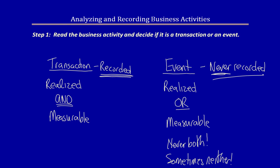Let's do two quick examples. A business provides consulting services. On July 1st a client signs a contract with the business that requires the business to provide three months of services in exchange for $12,000. Event or transaction? This is an event. Even though it is measurable at $12,000, it is not realized because the business has done nothing for the client and the client has not handed over any cash. Other examples of events are hiring a new employee who will start next week, or receiving an order for inventory from a customer but the business won't ship the product until next week or next month.